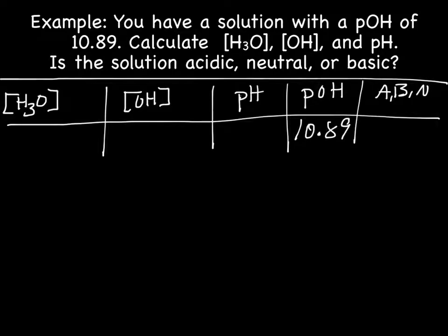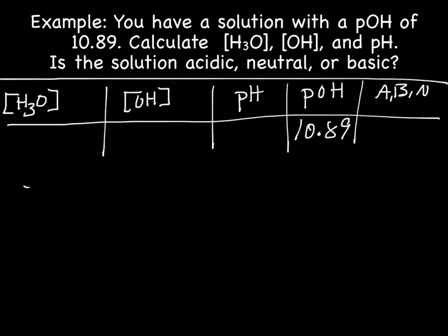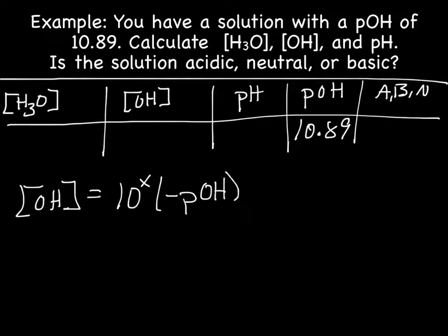So now we know pOH. Let's go back to our list of equations. And the stuff we know is on the right-hand side. And we know pOH, so we can use that equation there. So we'll have the concentration of OH equals the antilog of the negative pOH. So concentration of OH equals the antilog of negative 10.89.